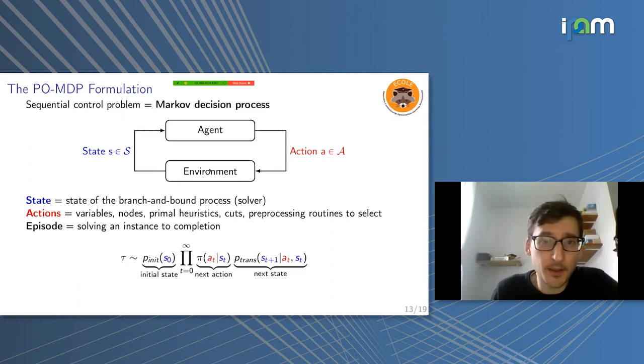The solver gives you some information about, say, variables, and then you decide on a variable to branch and you send that variable to the solver. And we aim to hide the environment. If you want to tackle a learning to branch task, you just have to implement the agent, you just have to care about the information that you get in, the information that you give out, and you don't want to care about the specifics of the solver itself.